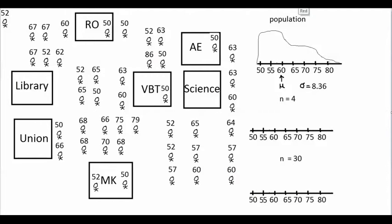Maybe we decide to go out and ask four students at Cal State East Bay what their heights are. Four would be a pretty small sample size, but let's just use four as our example. So what if we end up finding this student, this student, this student, and this other student? We would record their four heights, add those four heights, and divide the total by four to get the mean of our sample.